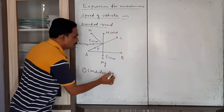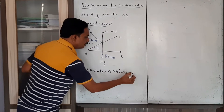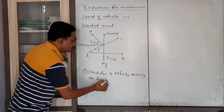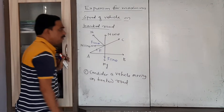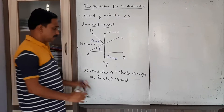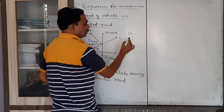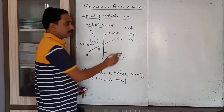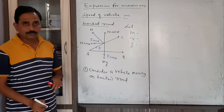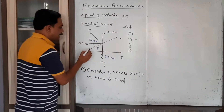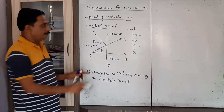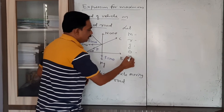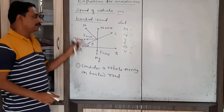Consider a vehicle moving on a banked road. You have to consider the various physical quantities related to this expression. Let m be the mass of the vehicle, r the radius of the circular road, g the acceleration due to gravity, theta the angle of banking — the angle made by the inclined surface with the horizontal surface — and v be the maximum speed with which the vehicle moves.